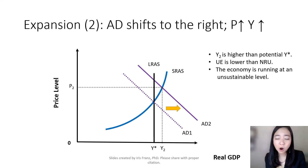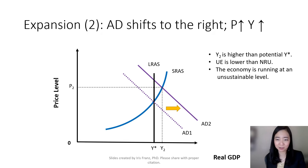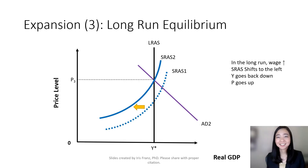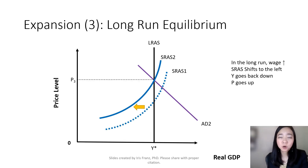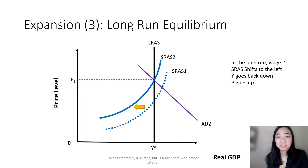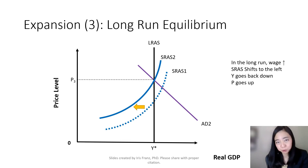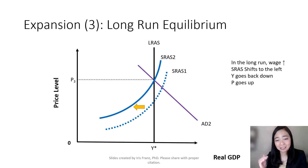So our economy is running at an unsustainable level. Here is what happens to our economy in the long run if neither the government nor the Federal Reserve, our central bank, does anything to intervene.